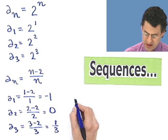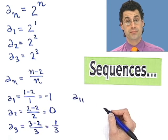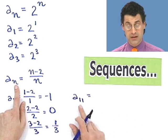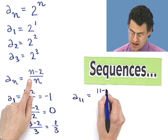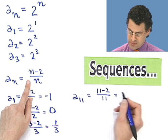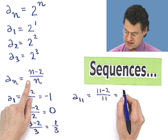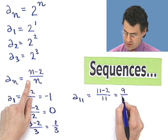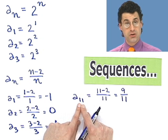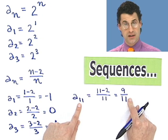For example, what is the 11th term? I can fast forward right to the 11th term because I'm just saying n is 11. So this would be 11 minus 2 all over 11, which equals what? Well, 11 minus 2 is what? That's like a 9 over 11. So the 11th term in this sequence is actually 9 elevenths.